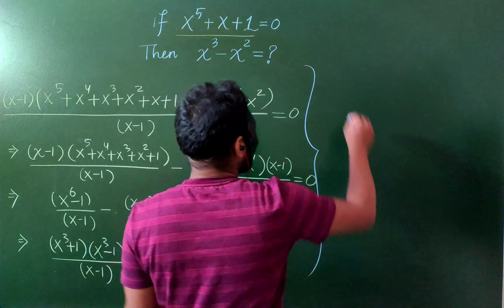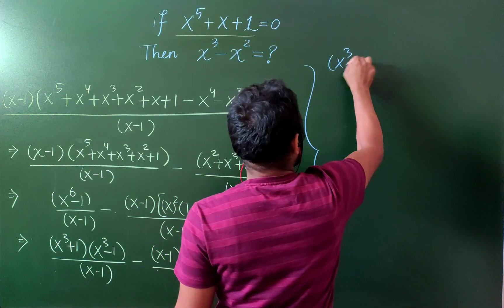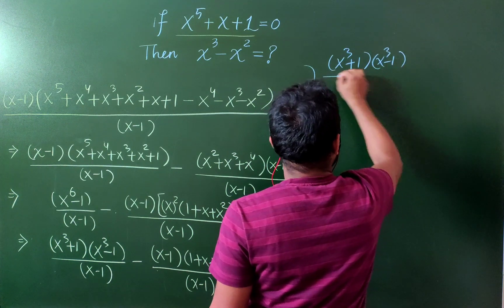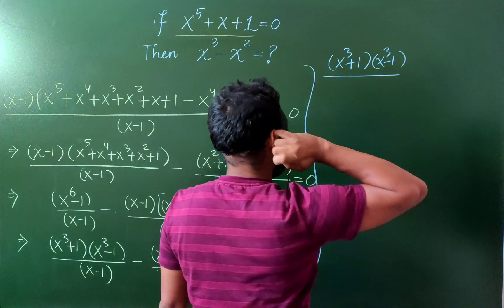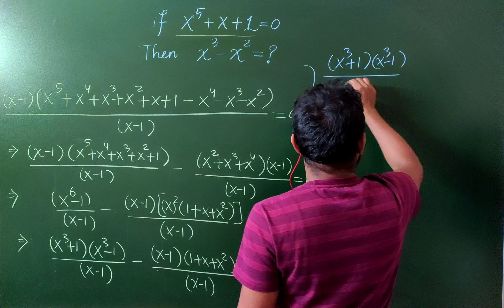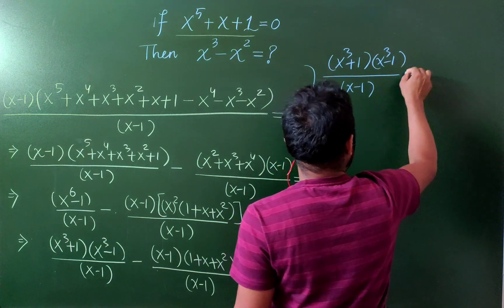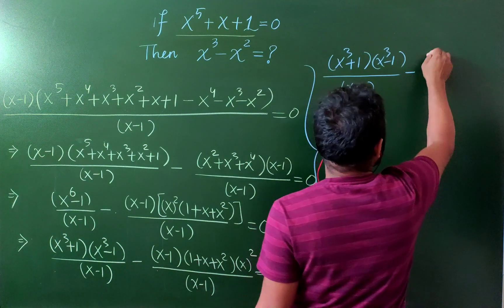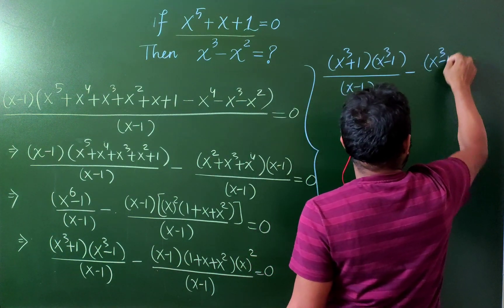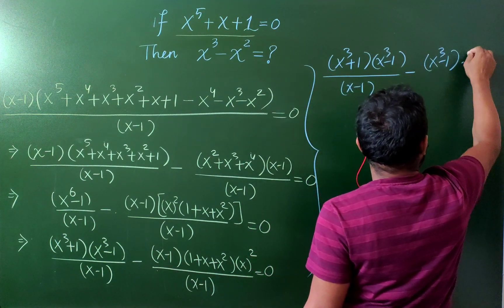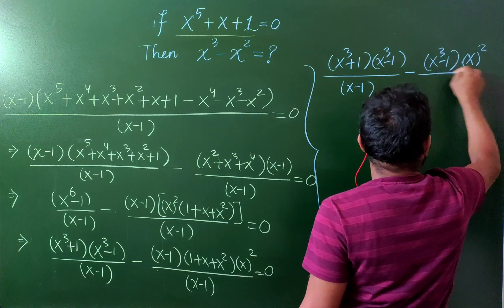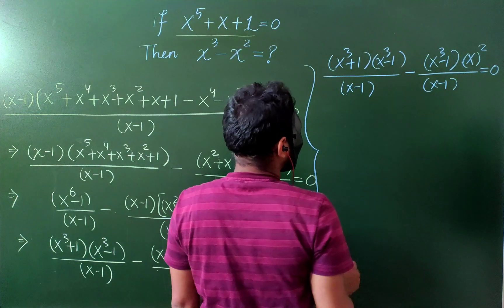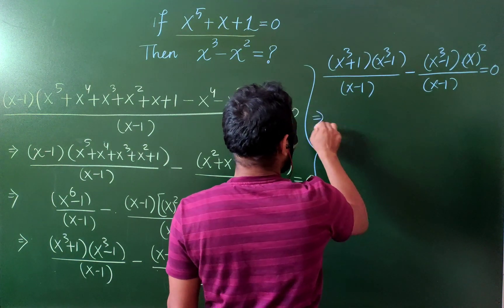Okay. Now, this is x^3 plus 1, x^3 minus 1, and then minus, this is now x^3 minus 1 times x^2. Right. Now, let's simplify.